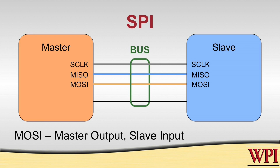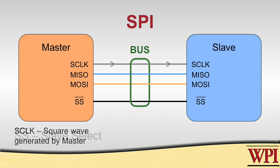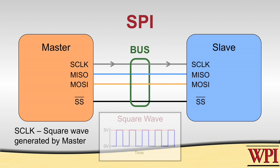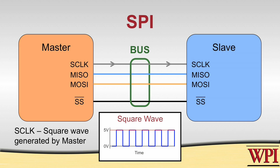MOSI stands for master output, slave input. The last line is called slave select, or SS. The SCLK line is simply a square wave generated by the master, and everything happening between the master and the slave is synchronized to that square wave. So this is what's called a synchronous protocol, and all of the bits being moved from the master to the slave, or from the slave to the master, move in concert with edge transitions.